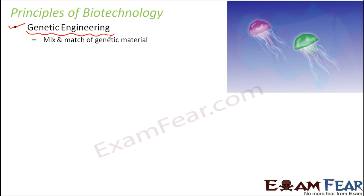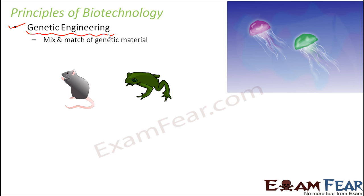Take this example: jellyfish, commonly seen in oceans, have a feature that they glow at night. This glow is because of a gene present inside their body — that particular gene is responsible for the glowing of a jellyfish at night. Now, suppose I want some other organism to also glow at night — let's say a frog or a mouse. A frog or a mouse doesn't have a gene which can make them glow at night.